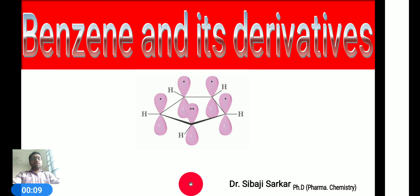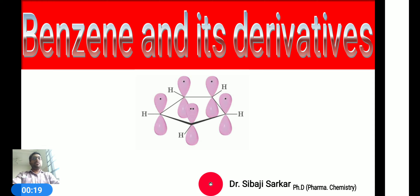Good morning everyone, myself Dr. Shivaji Sarkar. Today I am going to discuss the topic on benzene and its derivatives. Mainly I will focus on two points: first, why does benzene undergo substitution reactions rather than addition reactions, and second, what type of orbital structure do we observe in benzene? These questions are asked very frequently at the university level.